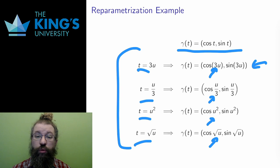u over 3 is going to move at one-third the speed. A full revolution will happen by the time u equals 6π, three times longer than the original t equals 2π.